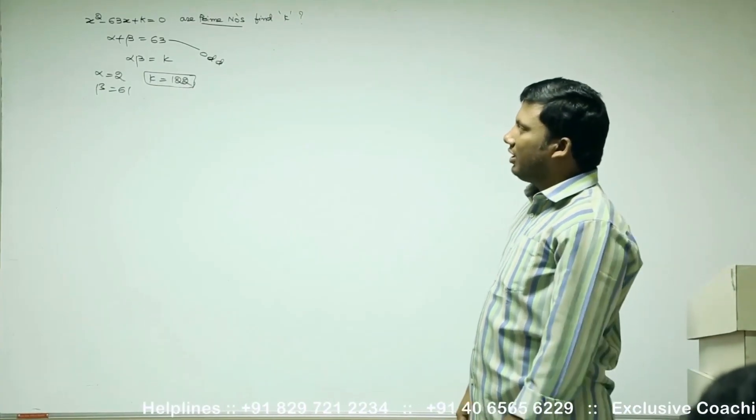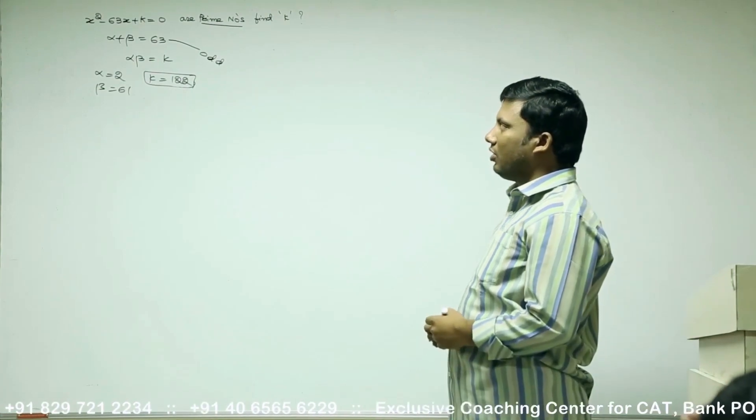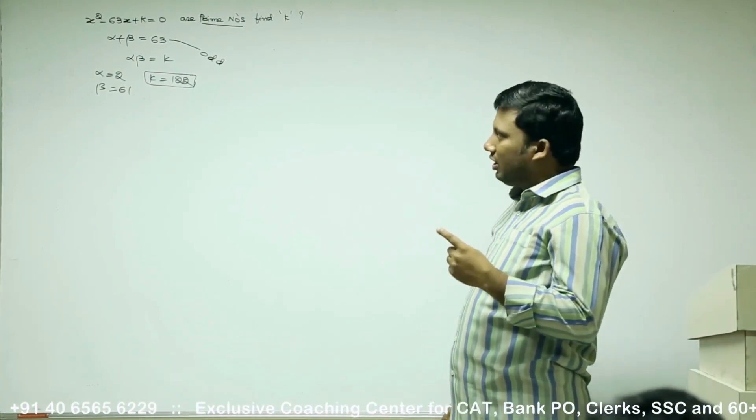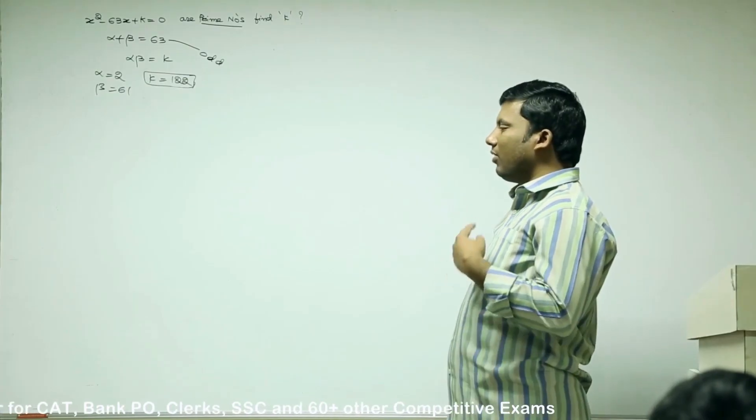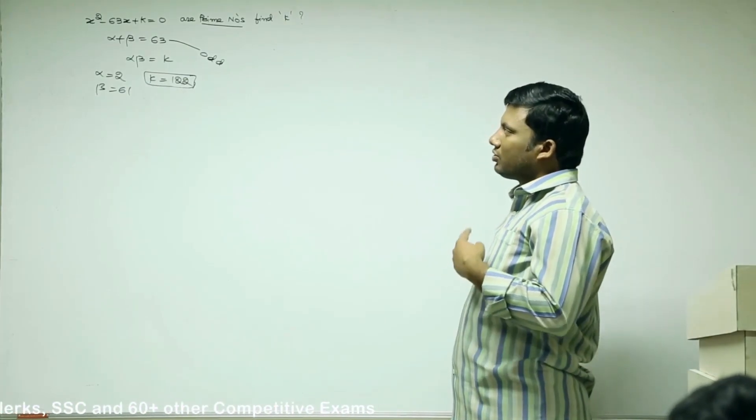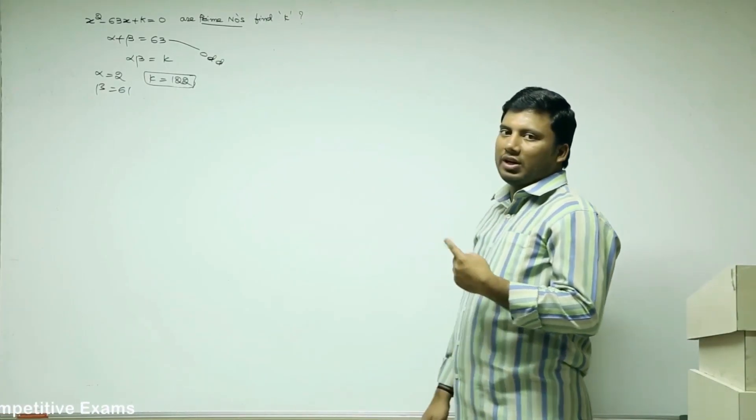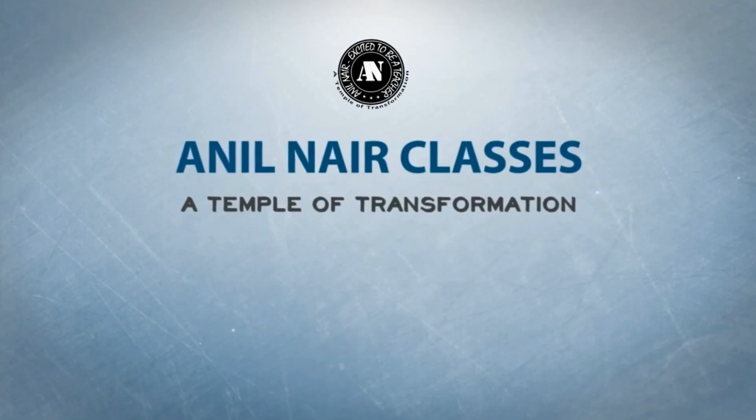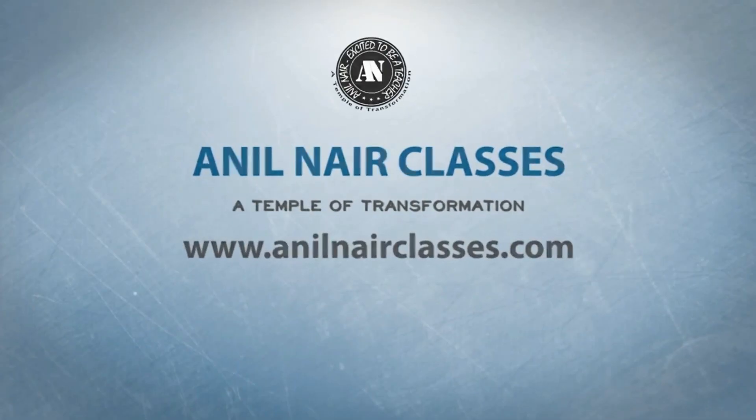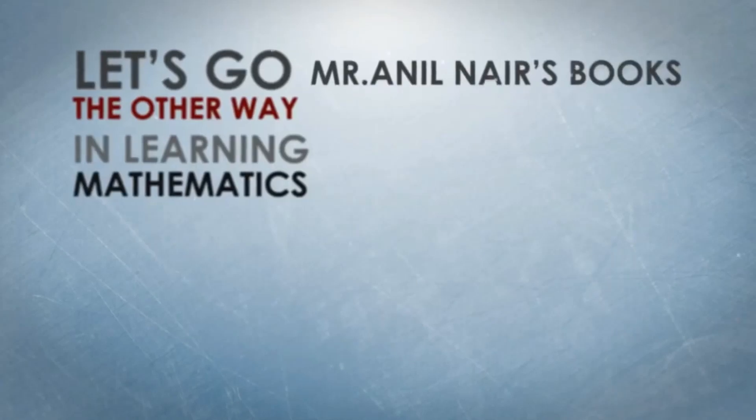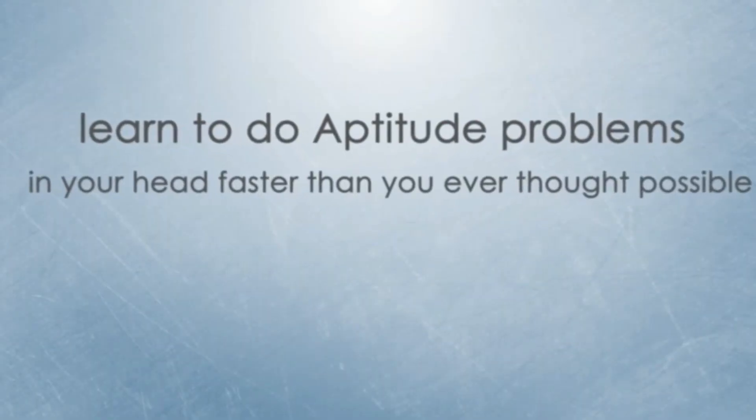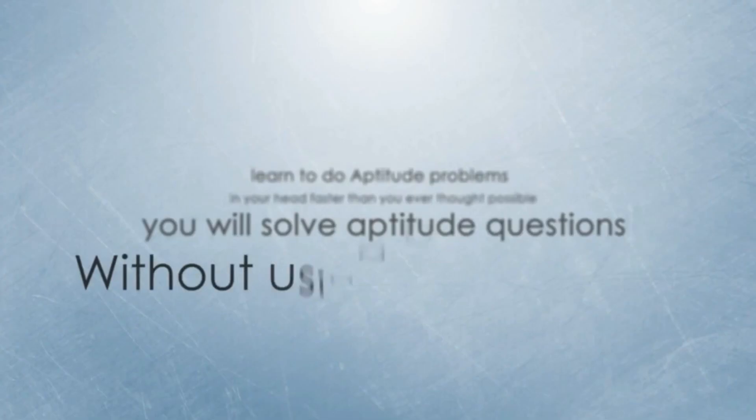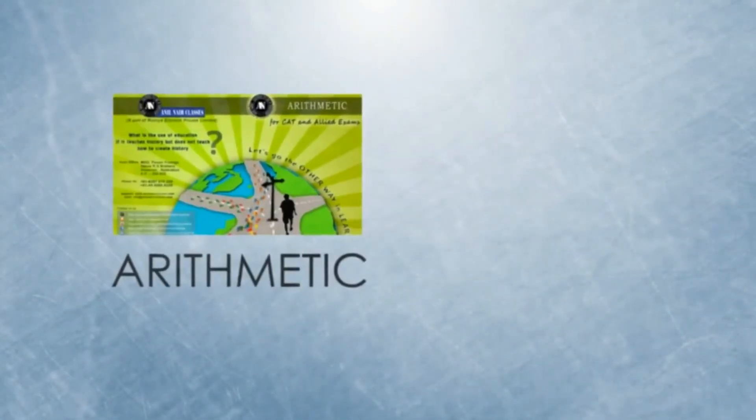Both the roots of the quadratic equation x square minus 63x plus k equal to 0 are prime numbers. Sum of the roots will be 63, product of the roots will be k. Because 63 is an odd number, two odd numbers sum cannot be an odd number. One has to be even and another has to be odd. So alpha is 2, beta is 61.